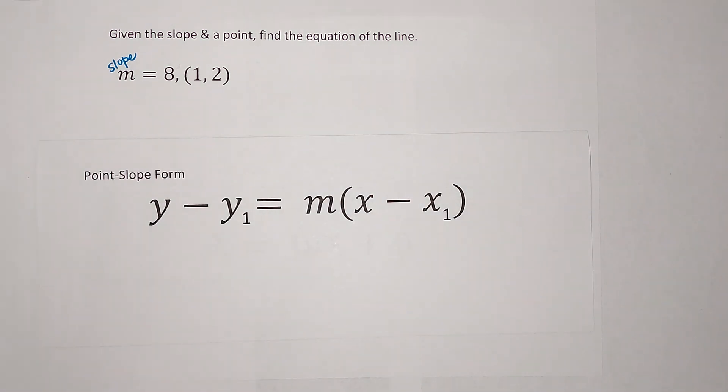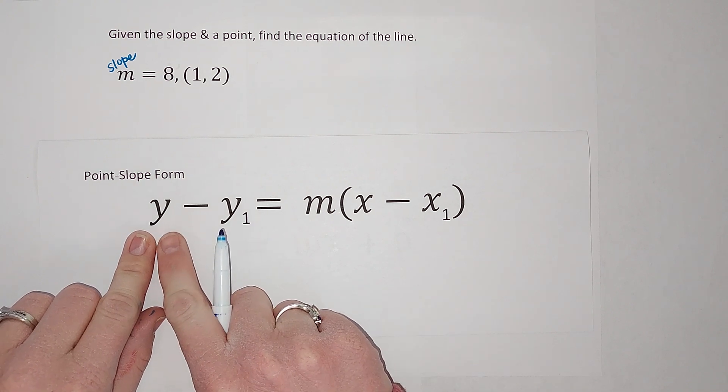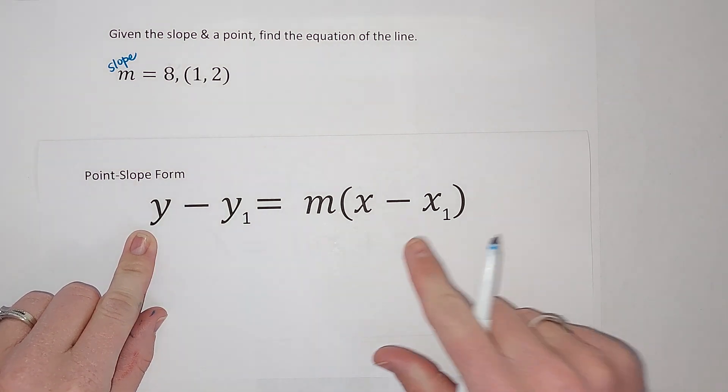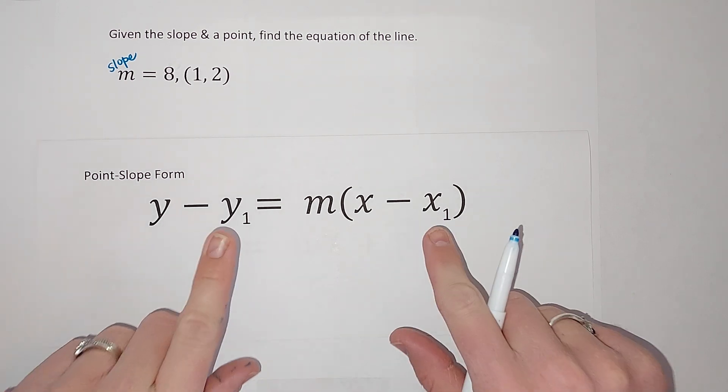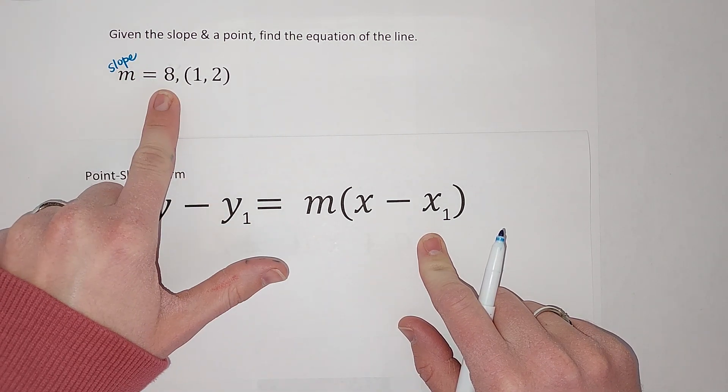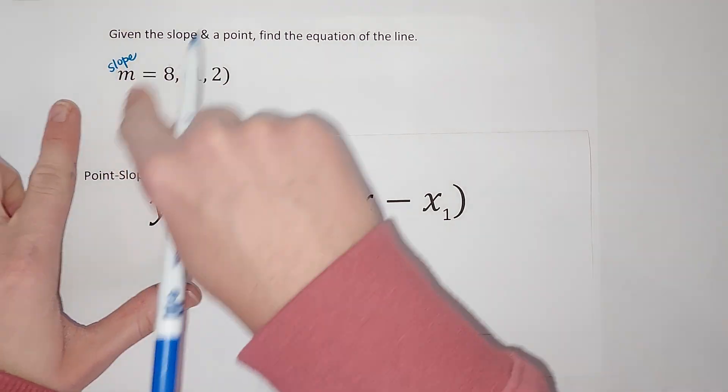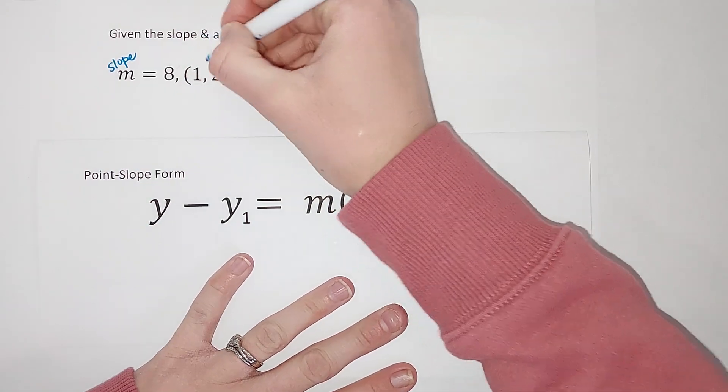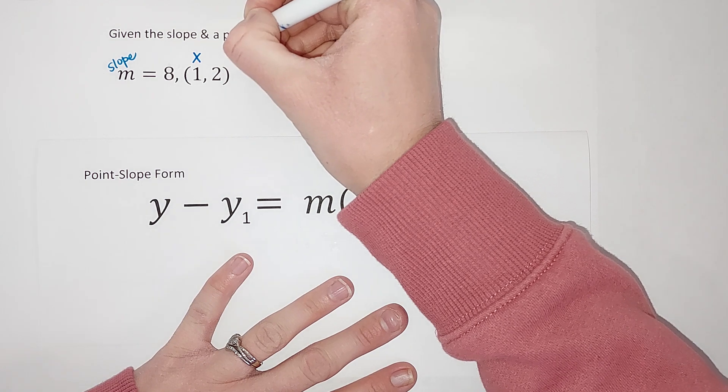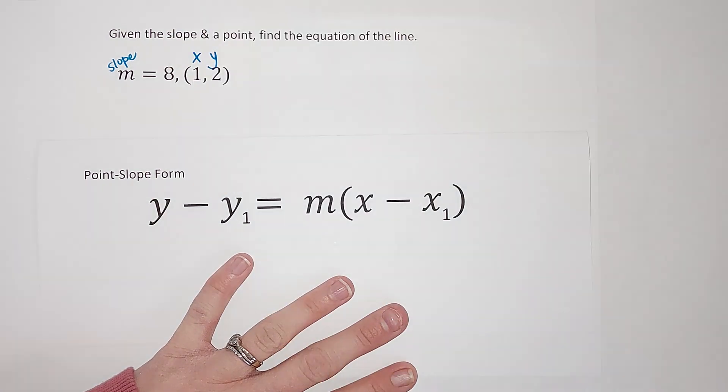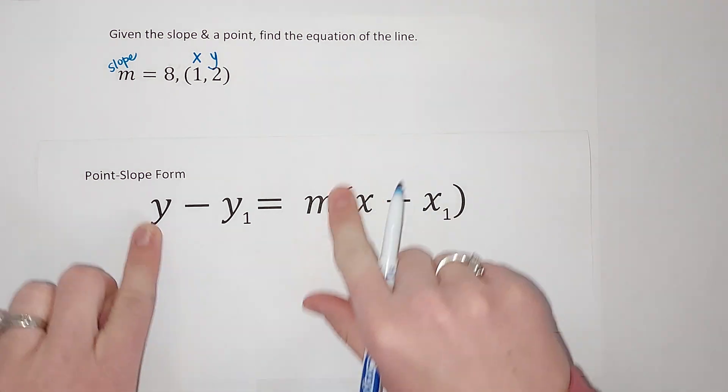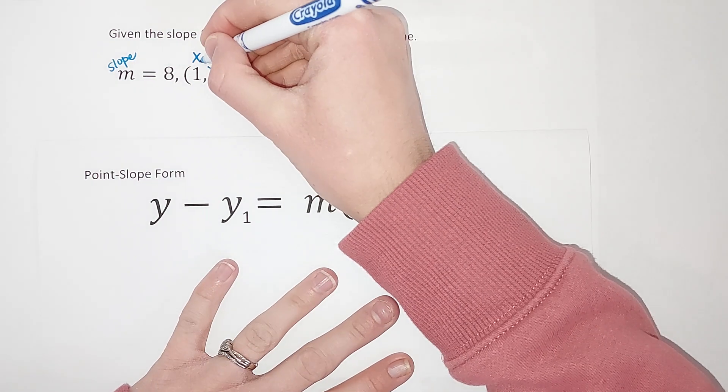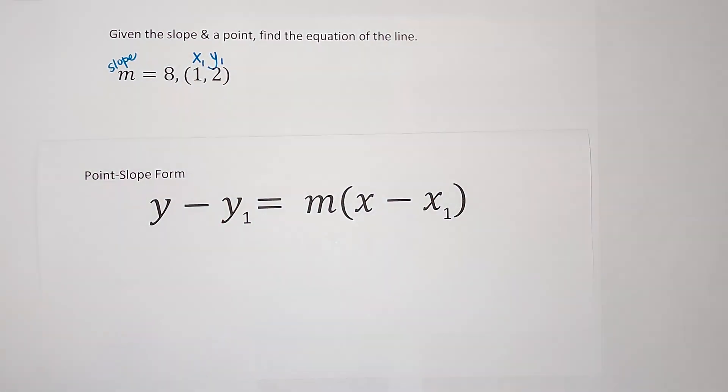When I am plugging this in, my Y is going to stay a Y and this X is going to stay an X. The X1 and Y1 come from here and the M comes from here. So we know our M. Remember when we have an ordered pair, the first number is an X, the second number is the Y. Now they're labeled with these ones to keep them separate from these ones. So I'm going to label them as X1 and Y1.